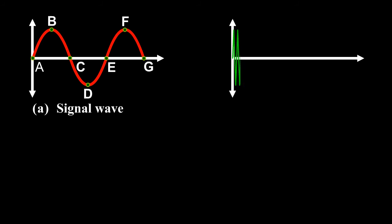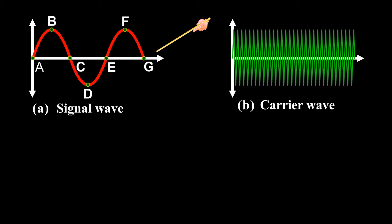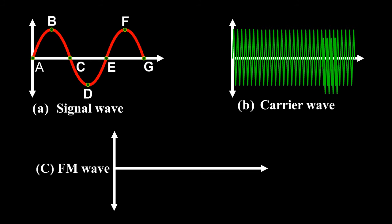The frequency variation of the carrier wave depends on the instantaneous amplitude of the signal as shown. When the signal voltage is 0 at A, C, E, and G, the carrier frequency is unchanged. When the signal approaches its positive peaks at B and F,